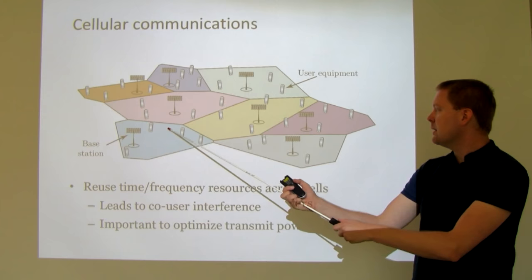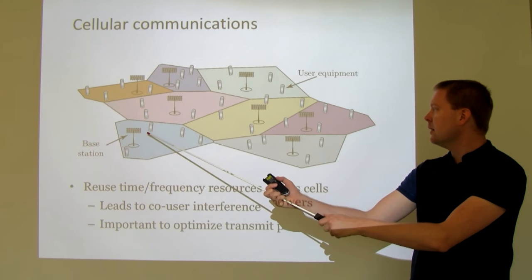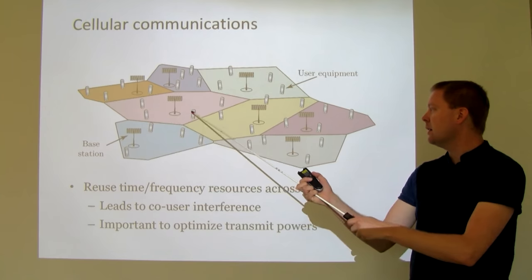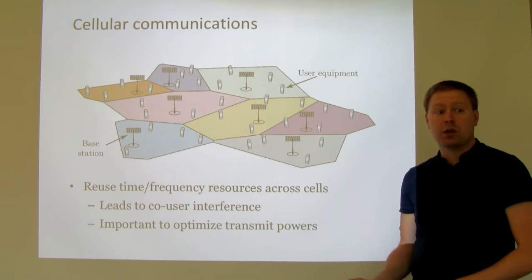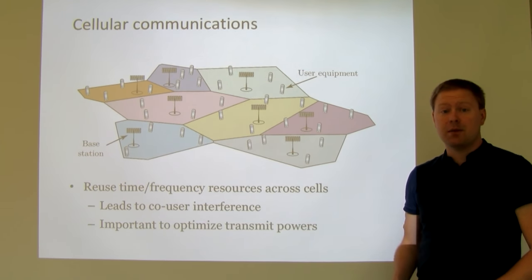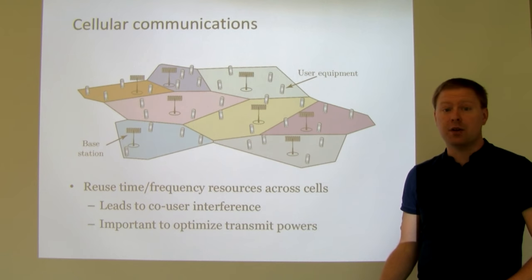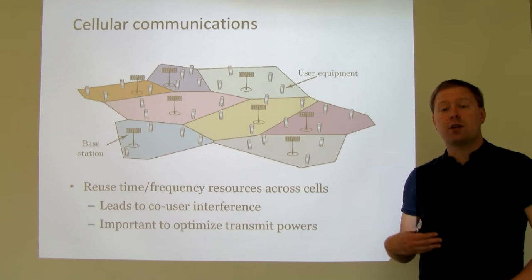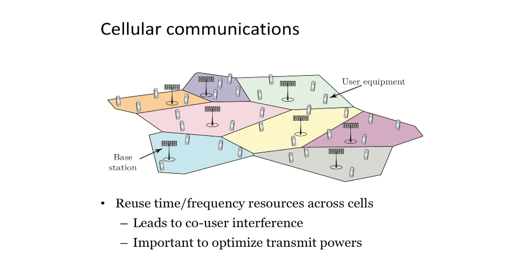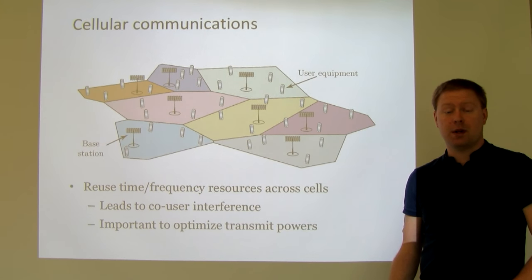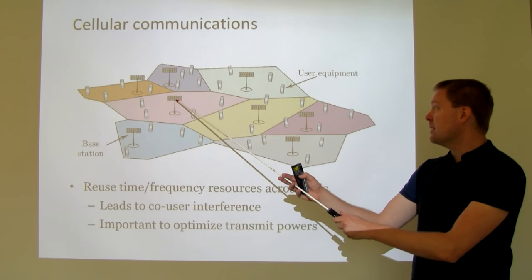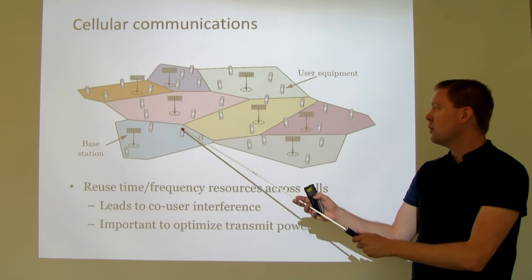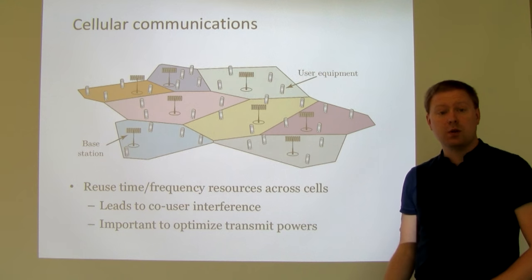When this base station is sending signals to its users and another base station sends signals to its users, there will be some crosstalk — some interference from these different base stations to the users of the other base station. Therefore it's important to take that interference into consideration when you design your transmissions, and in particular when you decide how much power you should spend, so that the signal from one base station will not create too much interference to users in the other cell.